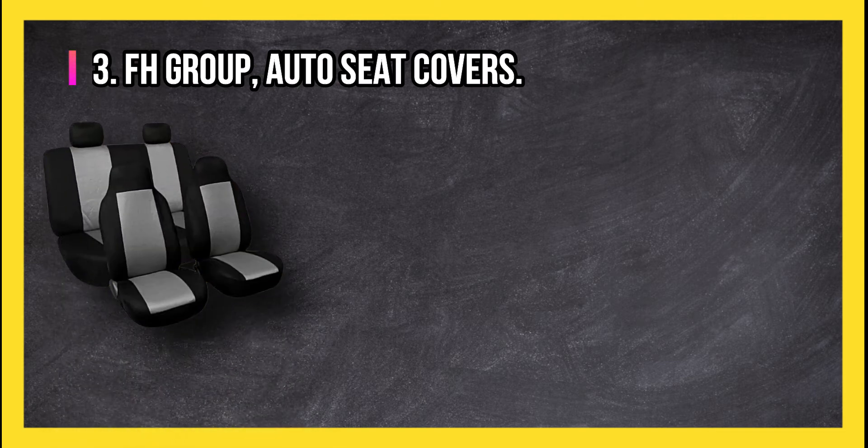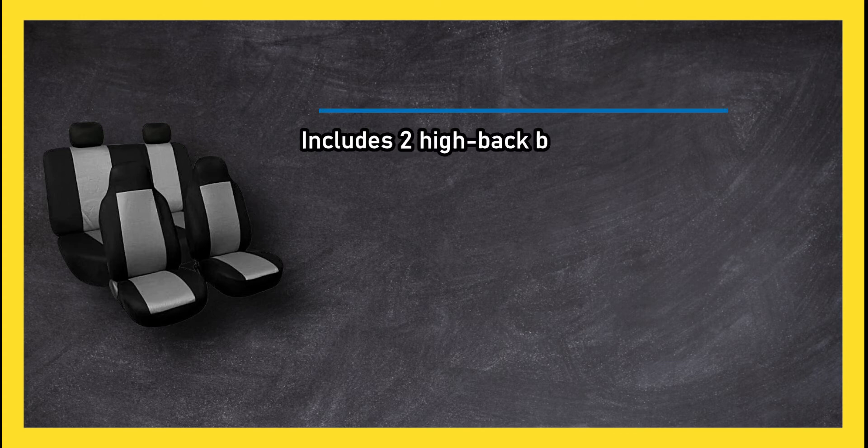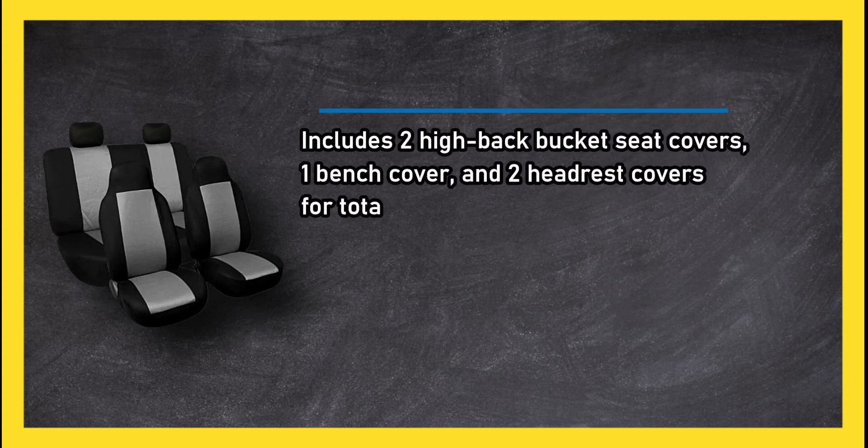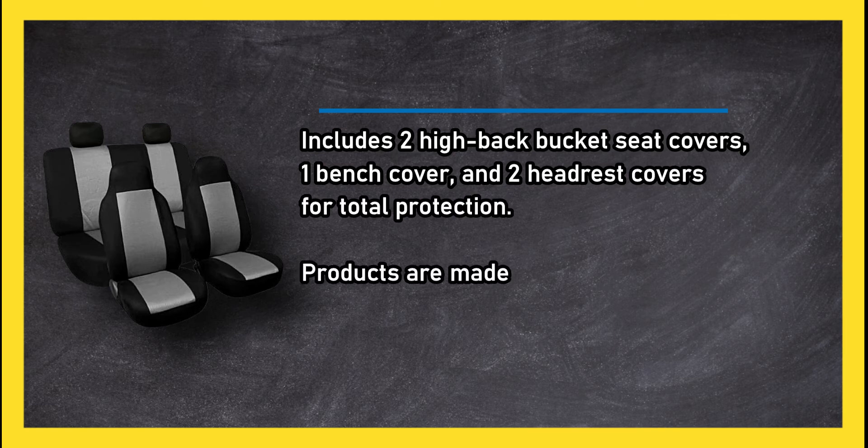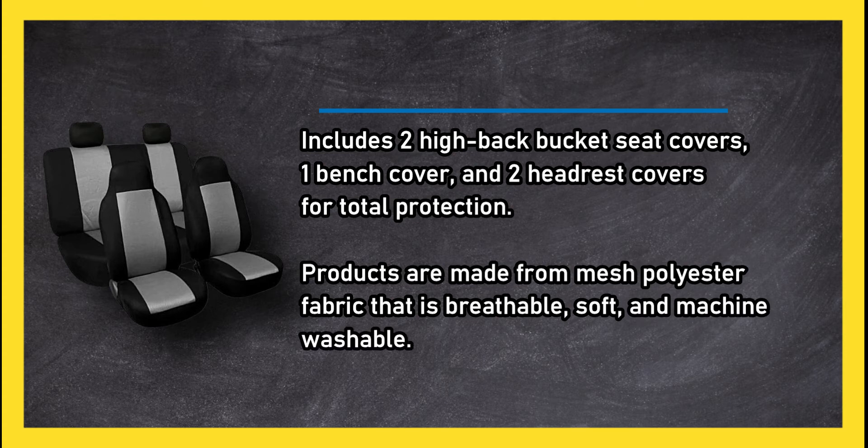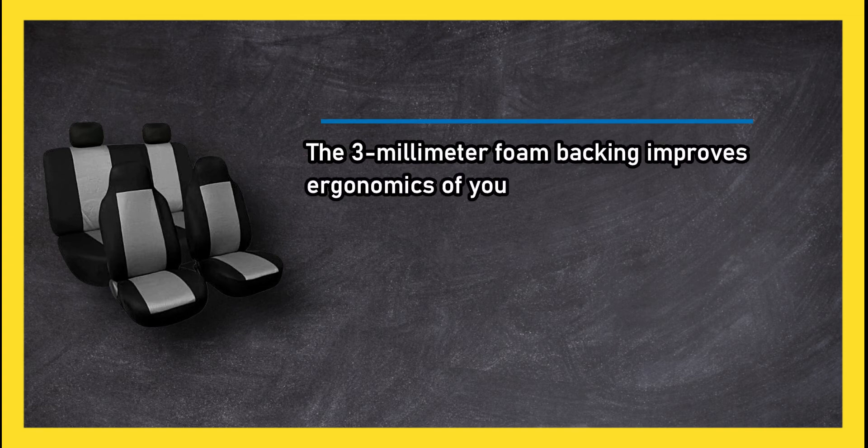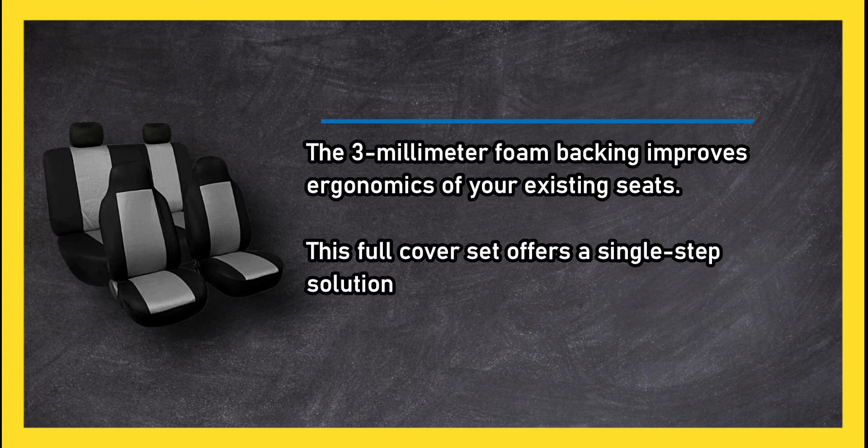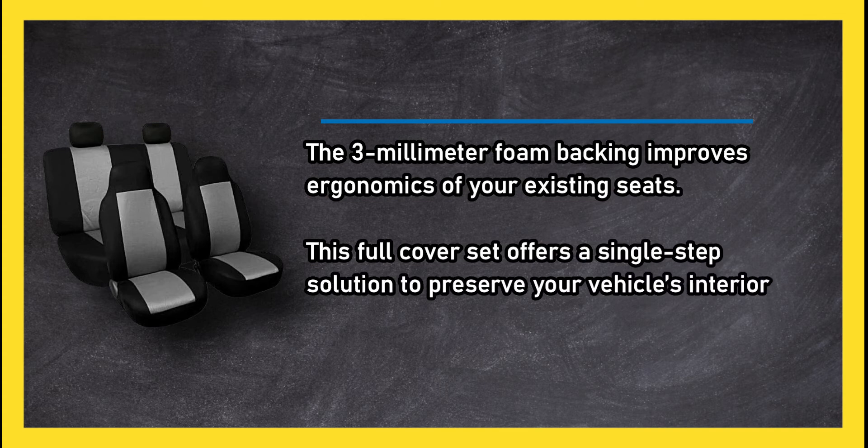FH Group auto seat covers includes two high-back bucket seat covers, one bench cover, and two headrest covers for total protection. Products are made from mesh polyester fabric that is breathable, soft, and machine washable. The three-millimeter foam backing improves ergonomics of your existing seats. This full cover set offers a single-step solution to preserve your vehicle's interior.